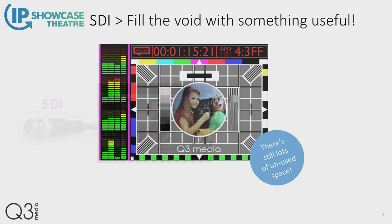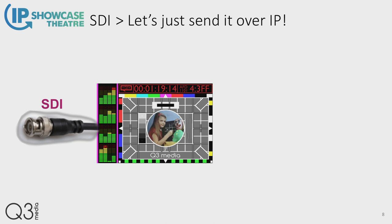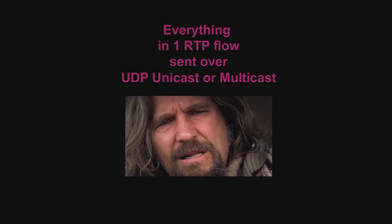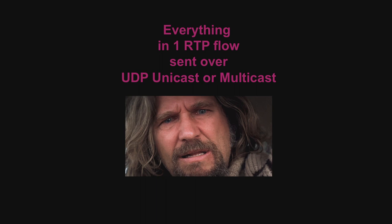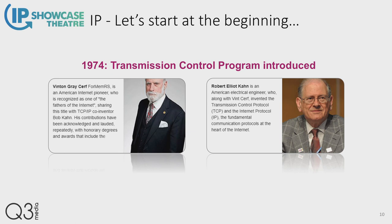We've used SDI for many years — very reliable. But some bright spark realized that off-the-shelf IT switch hardware was getting up to the data rates similar to what we use in video, and was becoming much more cost-effective than a big router. So why not take that SDI signal and send it over IP? That's exactly what we did. 2022-6 essentially takes an SDI signal as-is, sticks it through an IP encapsulator and out onto an IP network — everything in one RTP flow sent over UDP as either a unicast or a multicast stream. Some of you may think: one RTP flow, UDP multicast or unicast — let's try to explain and break that down a bit.